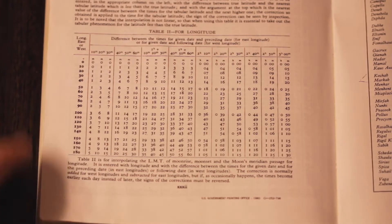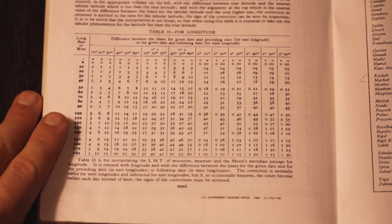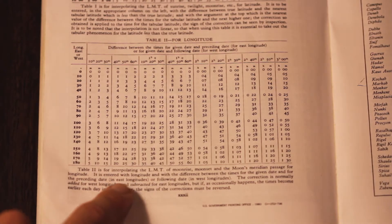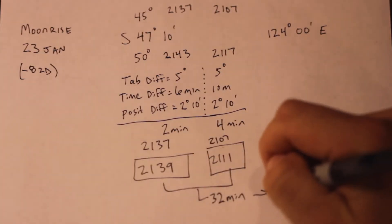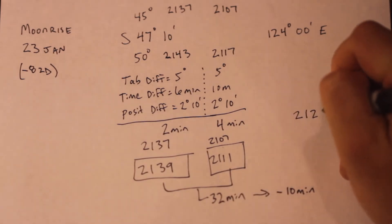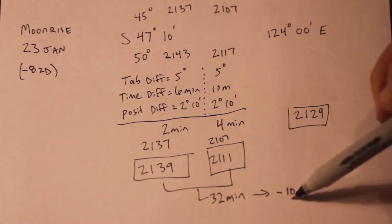Now to use table 2, we need the difference between them, which is 32 minutes. Table 2 then gives us a correction of 10 minutes, but again, we're in the eastern hemisphere, so this correction must be subtracted. Read the directions if you're in doubt. Once we've got the table 2 correction, we can apply that to the moonrise date we want, and we get 2129.